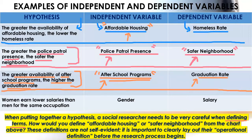That's a little overview of the kinds of things you might see in a positivist research approach. Especially take away the importance of defining your variables — coming up with an operational definition of all terms you're using, because many of these terms are not self-evident and you have to define them for your reader.